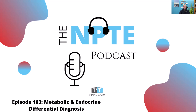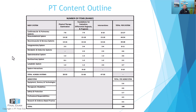Today we've got a practice question for you related to the metabolic and endocrine systems. On test day, you can expect a good handful of questions related to these systems — somewhere between four and six questions total, with two or three items each from the foundations for differential diagnosis or the interventions, making for a grand total of four to six questions. This is all according to the newest FSBPT content outline.